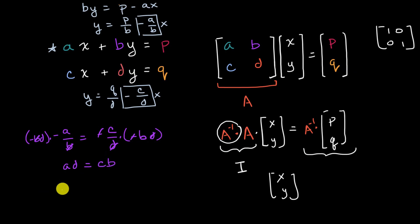Or another way to think about it is, a, d minus c, b is going to be equal to zero. When a, d minus c, b is equal to zero, this system of equations does not have a unique solution.